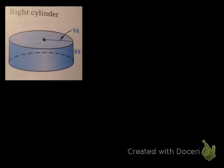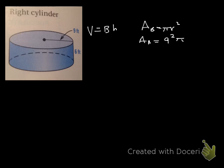Now we're going to find the volume of a right cylinder. The volume formula is standard: volume equals base times height. The only issue is finding the area of the base, which is πr². So the area of the base is going to be r squared — that's 9 squared times pi, which gives us 81π.